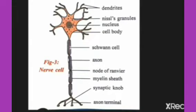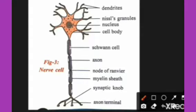Each nerve cell consists of a cell body with a prominent nucleus. These are Nissl's granules in the cell body. There are fine projections, mainly of two types, extending from the cell body of the nerve cell. The small projections are dendrites.